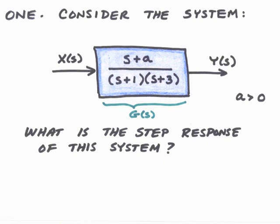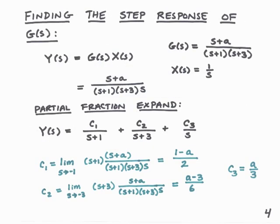To find out when we can approximate this second-order system as a first-order system, let's carry out the step response and see how the answer depends upon the value of a. The relationship is Y(s) = G(s) · X(s). Since x(t) is a unit step, X(s) = 1/s. And G(s) = (s + a) / [(s + 1)(s + 3)]. We'll put that together to find Y(s) and then partial fraction expand: Y(s) = c₁/(s + 1) + c₂/(s + 3) + c₃/s. We'll use the cover-up method to find c₁, c₂, and c₃.